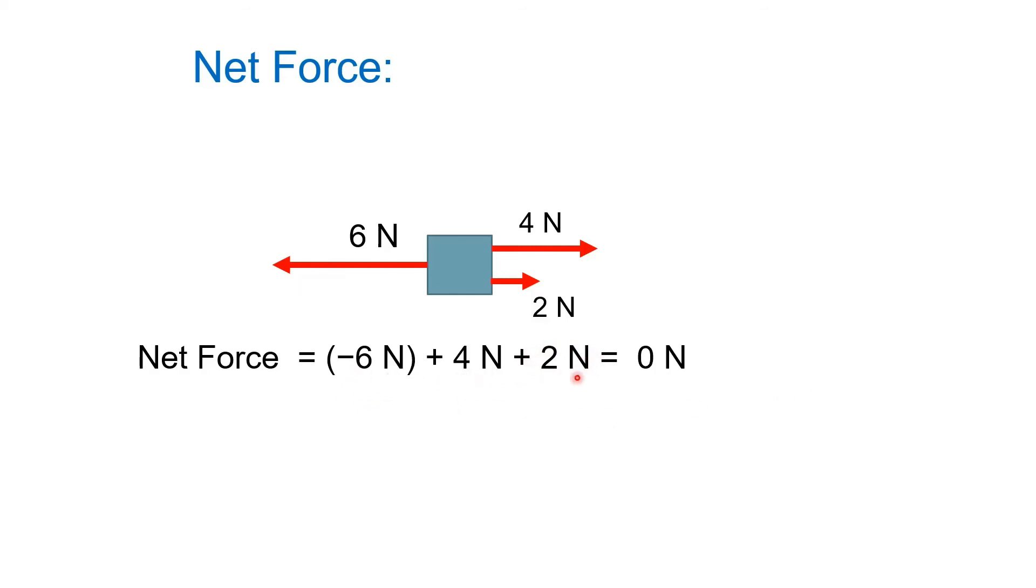So all we've done is added. So if we had 10 vectors, then you would see 10 terms, assuming it was all in one dimension. In this specific example, they still add up to be zero. So you would still call this equilibrium.